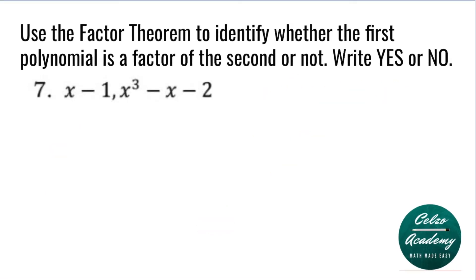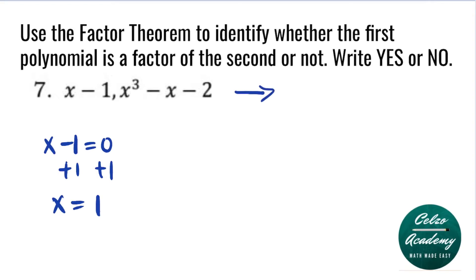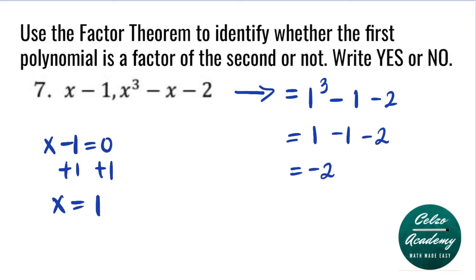Question 7: x minus 1 and x cubed minus x minus 2. Our first polynomial is x minus 1, so we solve for x by equating this to 0. Adding 1 to both sides, our x value is equal to 1. Using the factor theorem, we plug in x equals 1 into x cubed minus x minus 2. We have 1 to the third minus 1 minus 2. Simplifying: 1 to the third is 1, minus 1 minus 2. 1 minus 1 is 0, 0 minus 2 is negative 2. Since the value is not 0, x minus 1 is not a factor of x cubed minus x minus 2.